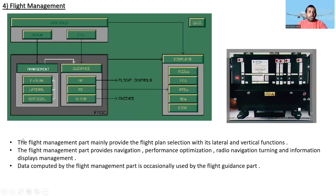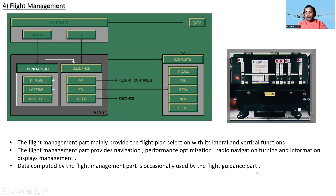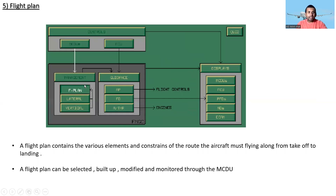The flight management part mainly provides the flight plan selection with its lateral and vertical functions. It also provides navigation, performance optimization, radio navigation tuning, and information display management. The data computed by the flight management part is occasionally used by the flight guidance part. This is the flight management computer in the avionics bay.